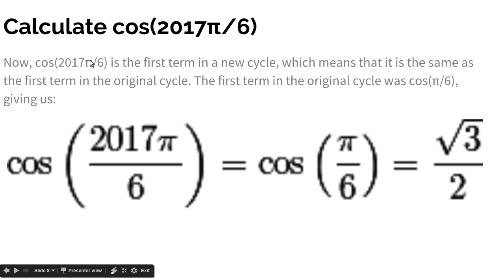Cosine 2017π/6, since it just came after the end of the old cycle, which was 2016π/6, this is the first term in a new cycle. That means that it's the same as the first term in the original cycle, which was cosine π/6. So 2017π/6 and π/6 are the same angle, since they have a difference of 2016π/6, which is a multiple of 2π. So that means cosine 2017π/6 and cosine π/6, they're both the first term in their cycle, and they're both the same angle, since they have a difference of 2π. So they're both equal to each other.